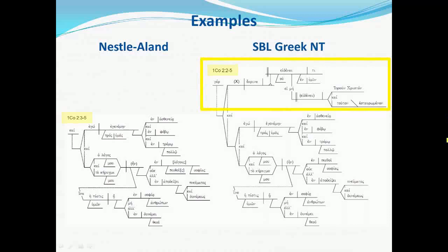Now let's look down at the middle portion. Paul says, according to the Nestle-Aland text, 'my word and my proclamation were not in persuasive words of wisdom.' Notice the bracketed word 'logois' and the bracketed letter sigma at the end of 'pathois.' The SBL text follows the reading without those bracketed portions, and the construction comes out differently. The word from the 'path' root, instead of being a dative plural adjective modifying 'logois,' is now a dative singular noun functioning as the object of 'in' — 'not in persuasion of wisdom.' So here's an example of a wording difference that affects the diagramming.